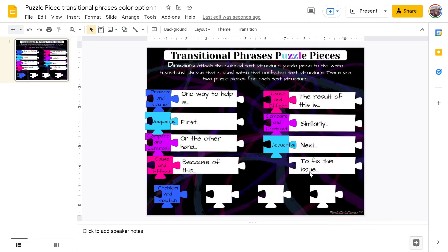Moving on underneath that, we see simply the word next. Next is a sequential transition. We're going to go grab that teal sequential puzzle piece and pull it up. We only have one option left, which is problem and solution. Our last transitional phrase says to fix this issue. If I'm a writer and I'm using the phrase to fix this issue, I've already explained to my reader about a problem, and now I am giving them options about how they can fix this problem. We grab the problem and solution puzzle piece and drag it into their spot. We can see all of our puzzle piece spaces are white. We have finished the activity and now we are ready to turn it in.